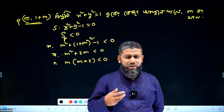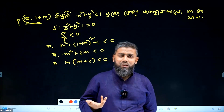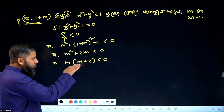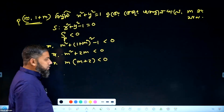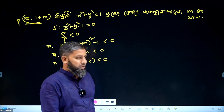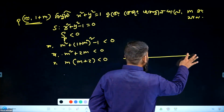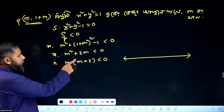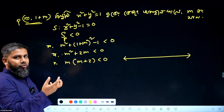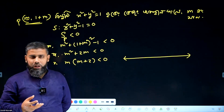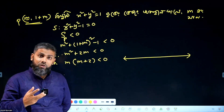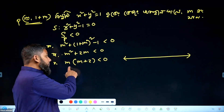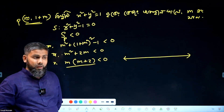You may have learned this before or maybe not. I want to show you this small thing — solve this inequality using a line diagram. Solve it using a line diagram. What we want is the product of the two factors to be negative.